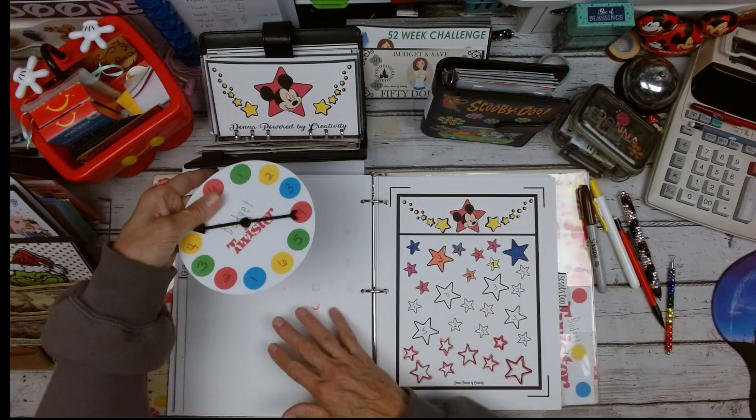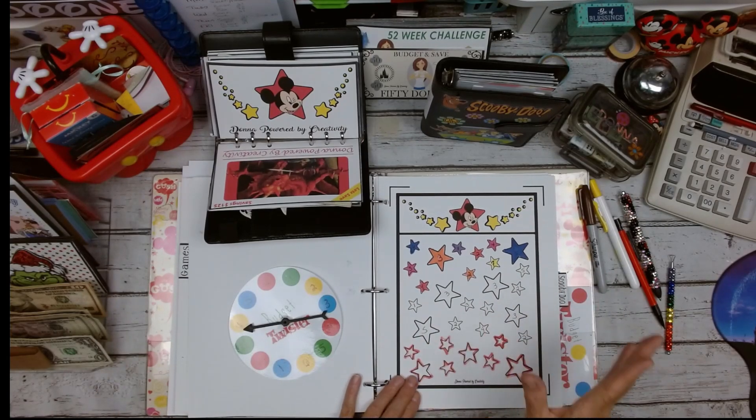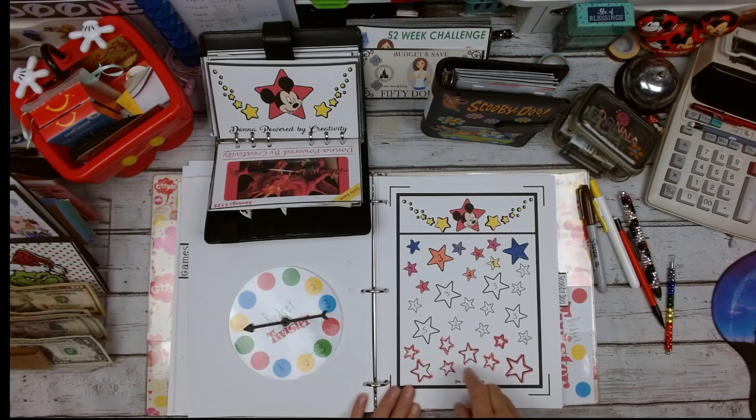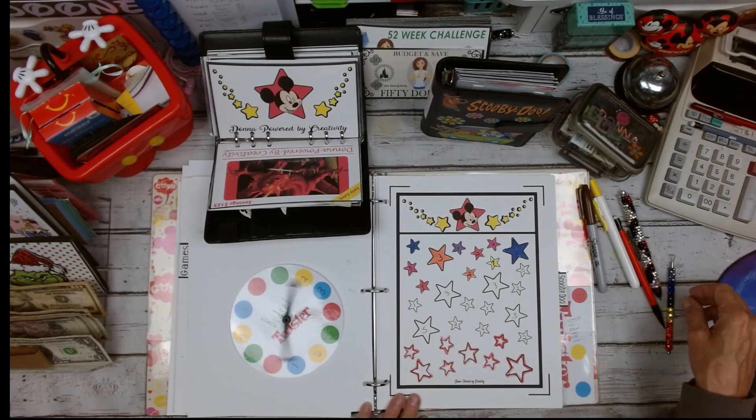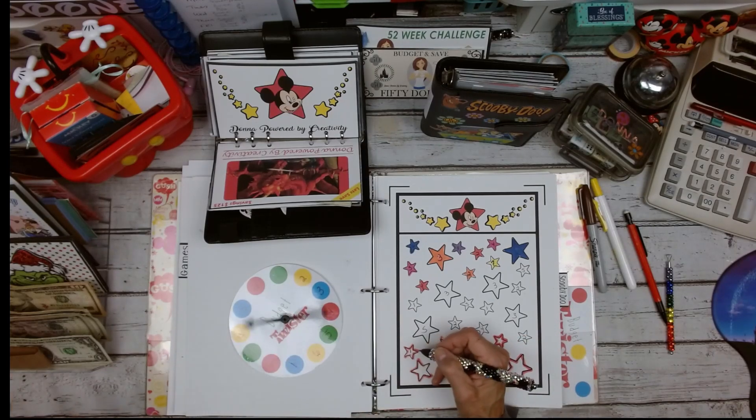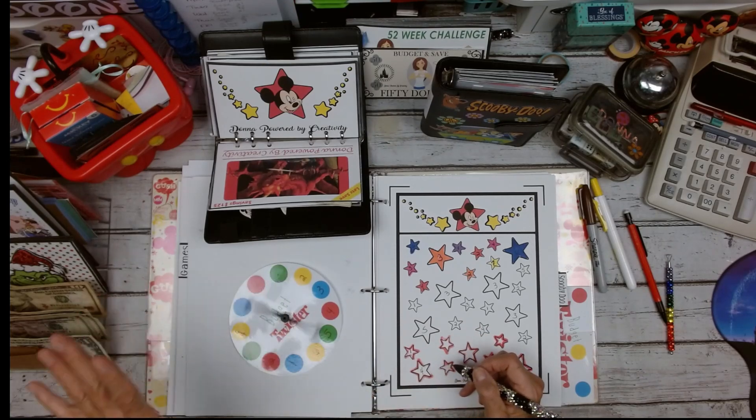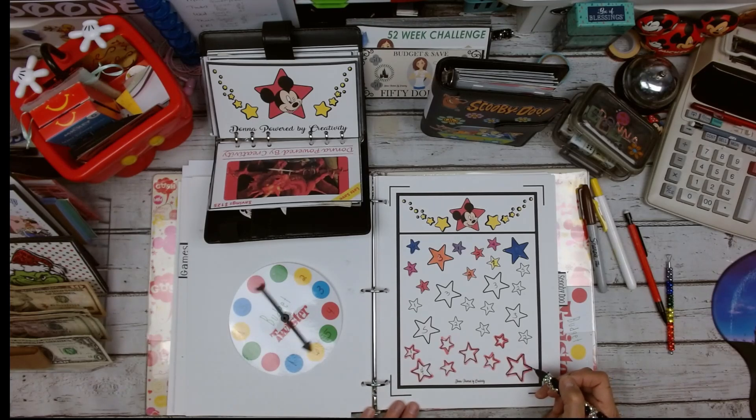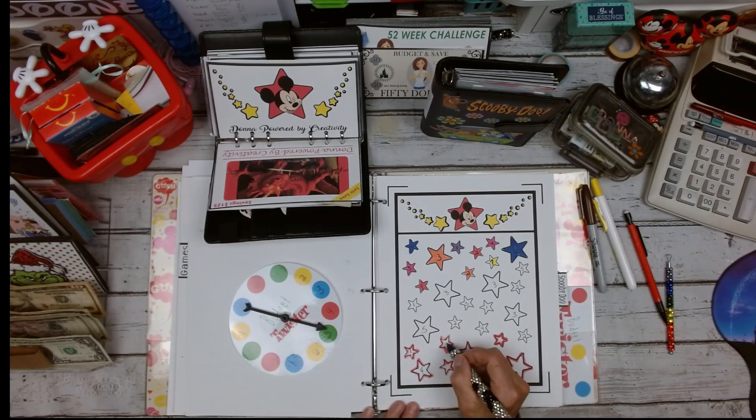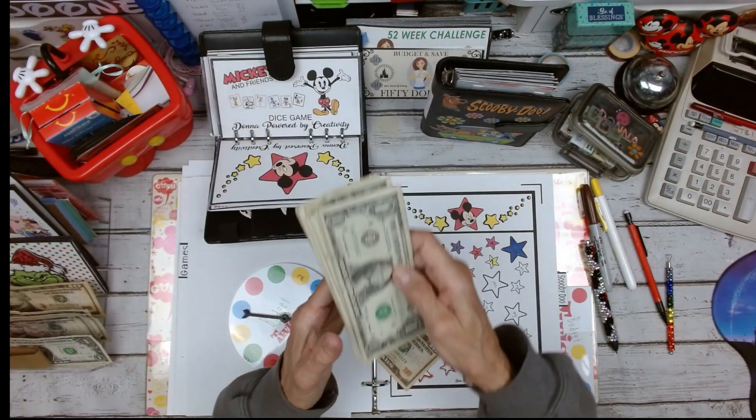Now we're up to Mickey Mouse. Now Mickey Mouse, I usually roll the dice. And we did those stars already. We just didn't color them in. We're up to the red ones. So let's see what we get. We got one. We're going to give that one. Going to go again. We got four. That's five. Let's go one more time. Five. Okay. We're giving this $10.